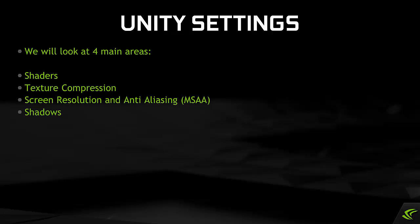It also supports a new texture format which we'll talk about later. When it comes to setting graphics quality in Unity we're going to look at four major areas: shaders, texture compression, screen resolution and anti-aliasing, and finally shadows.